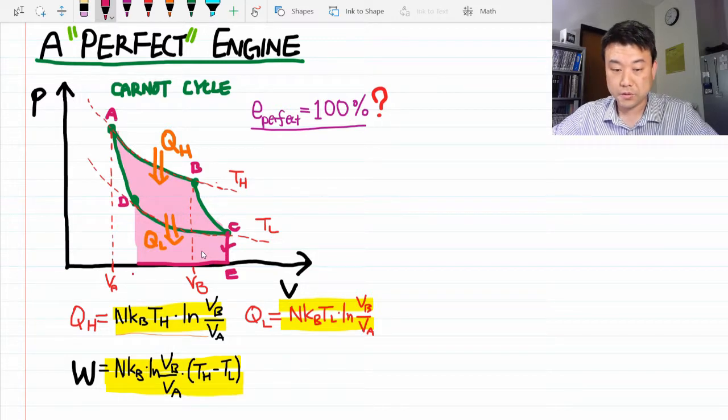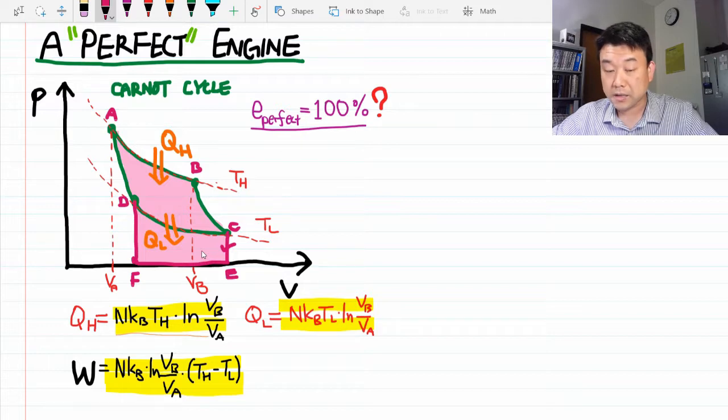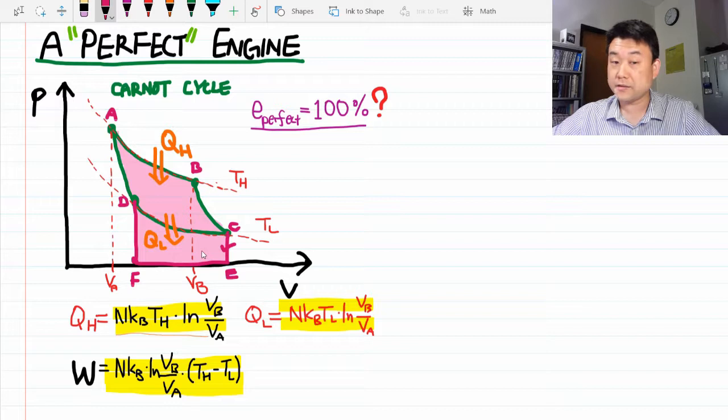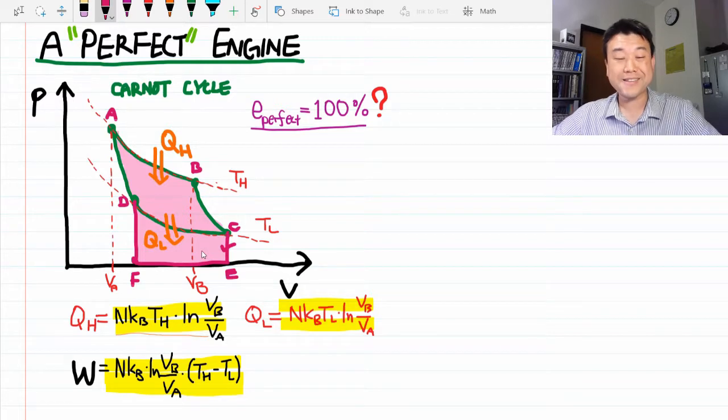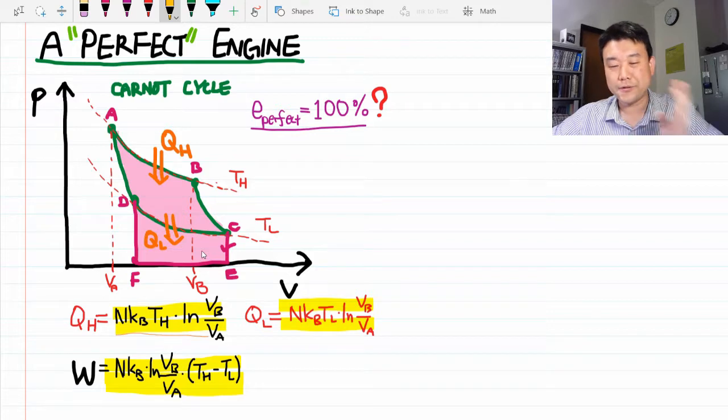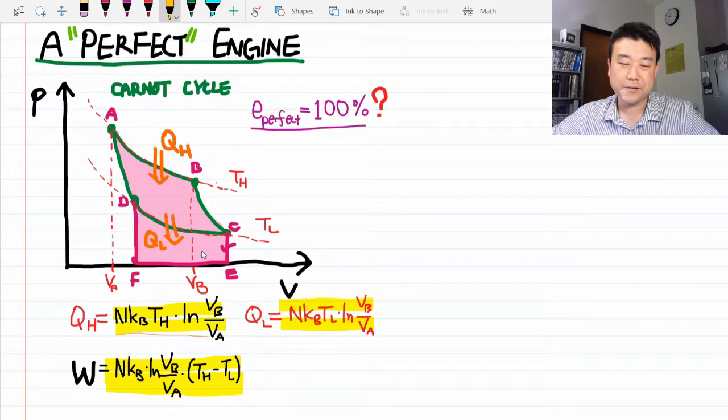And once you are at point F, then now you can absorb heat, cause it gets to undergo isochoric heating. Now, all of the pink area is the work done. Nothing wasted. Now, if you look at this carefully, you have to come up with a conclusion. It wasn't so good.